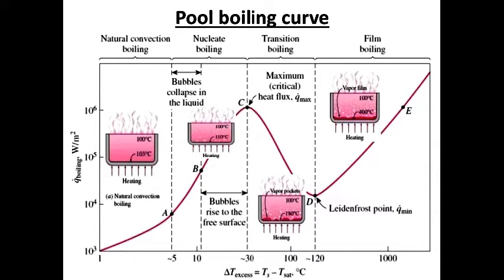In film boiling region, the heater surface is completely covered by a continuous stable vapor film. Point D, where the heat flux reaches a minimum, is called the Leidenfrost point. The presence of a vapor film between the heater surface and the liquid is responsible for the low heat transfer rates in the film boiling region. The heat transfer rate increases with increasing excess temperature as a result of heat transfer from the heated surface to the liquid through the vapor film by radiation, which becomes significant at high temperatures.